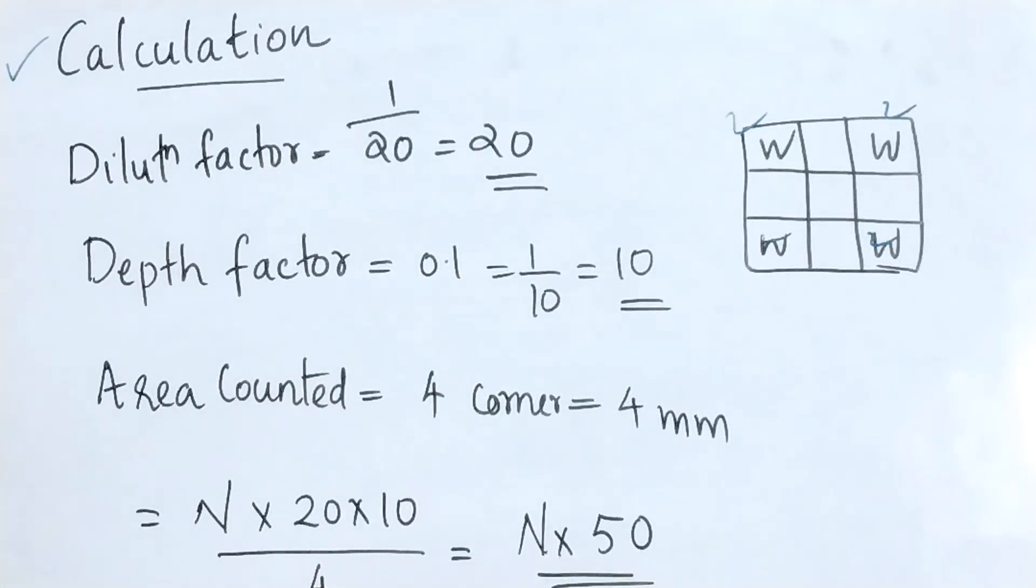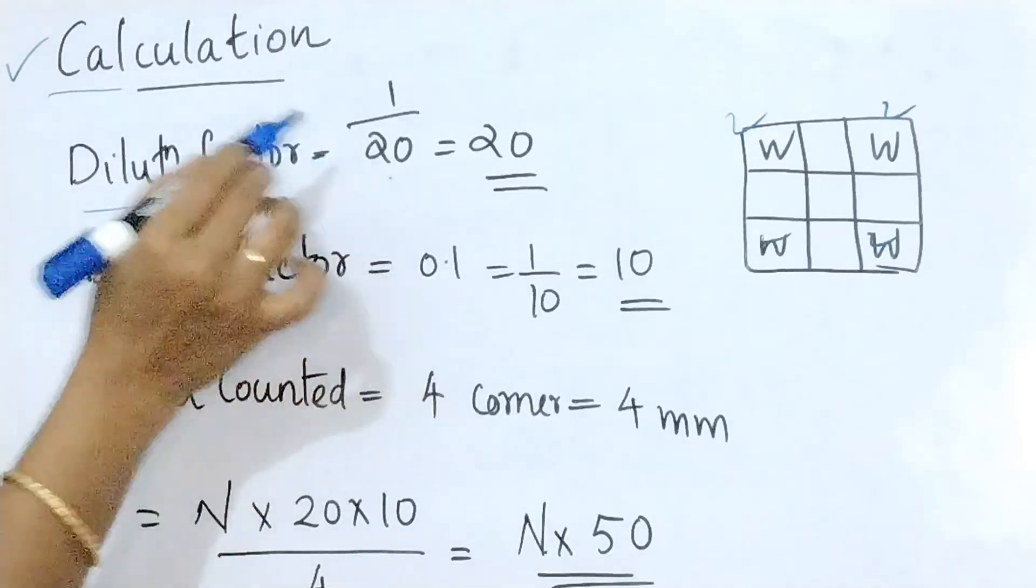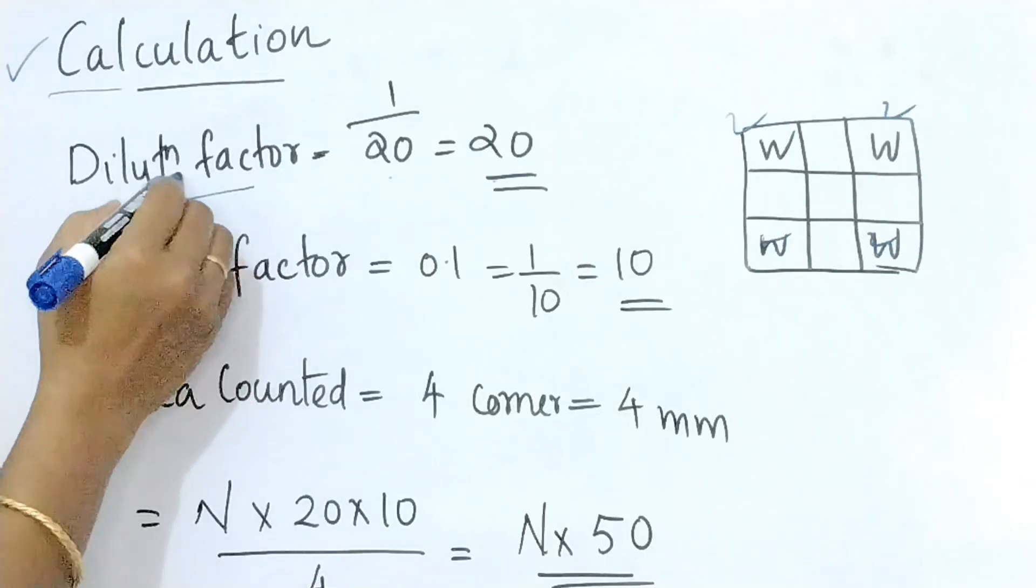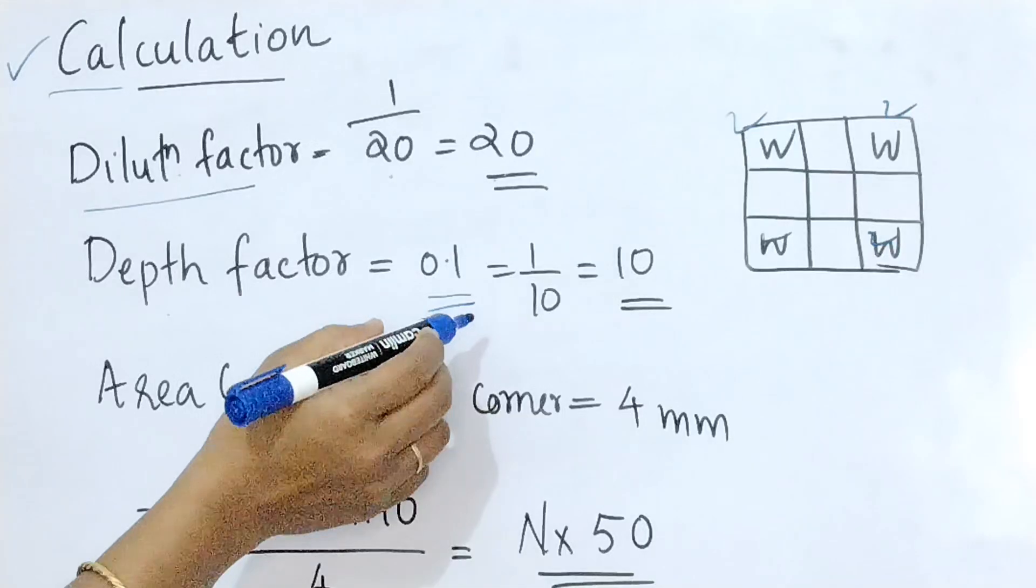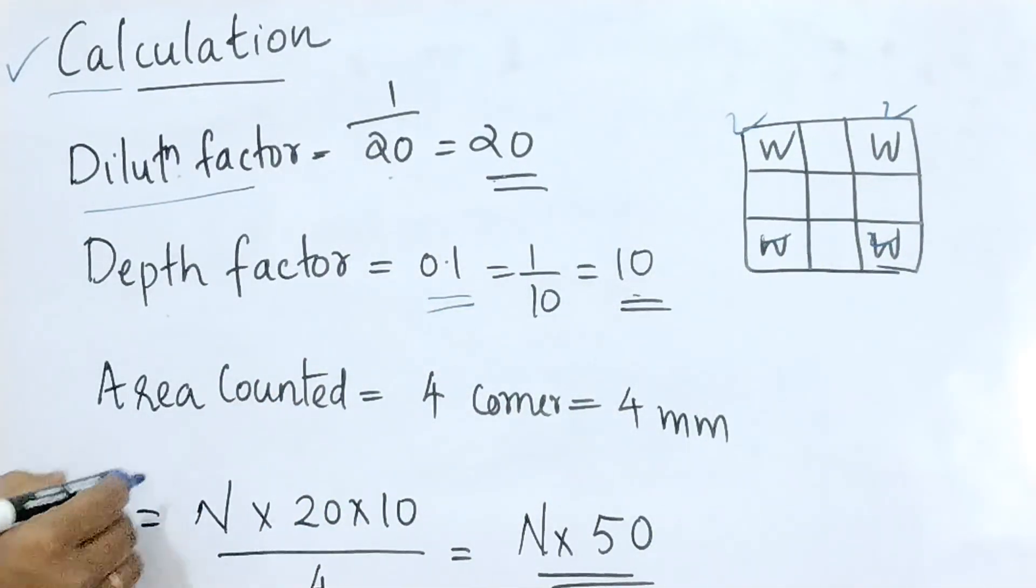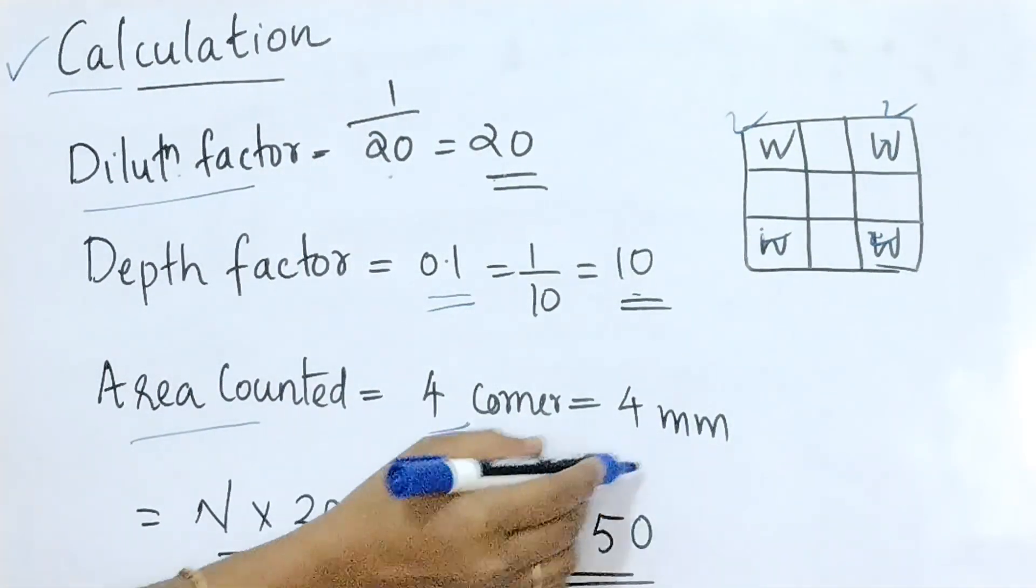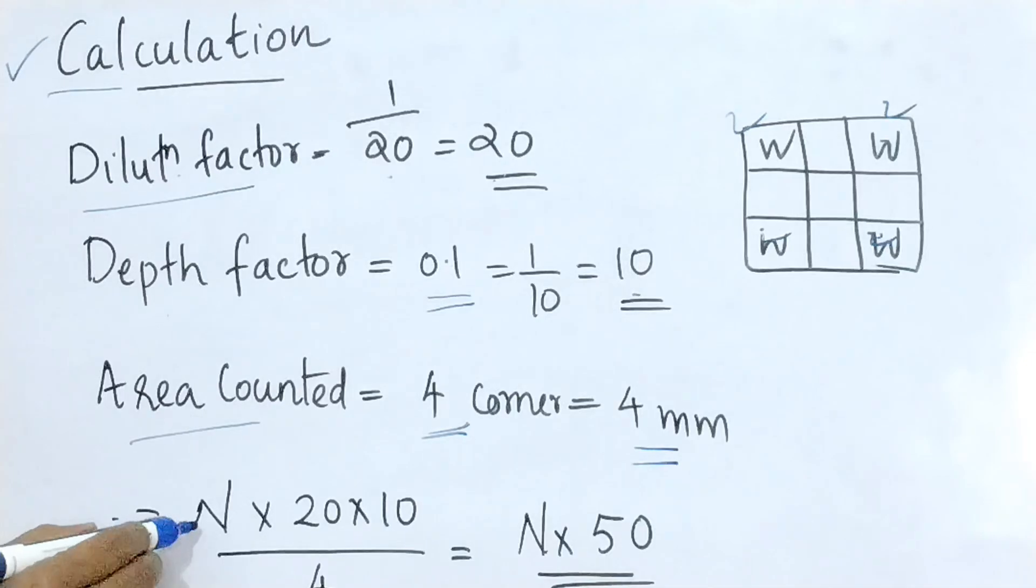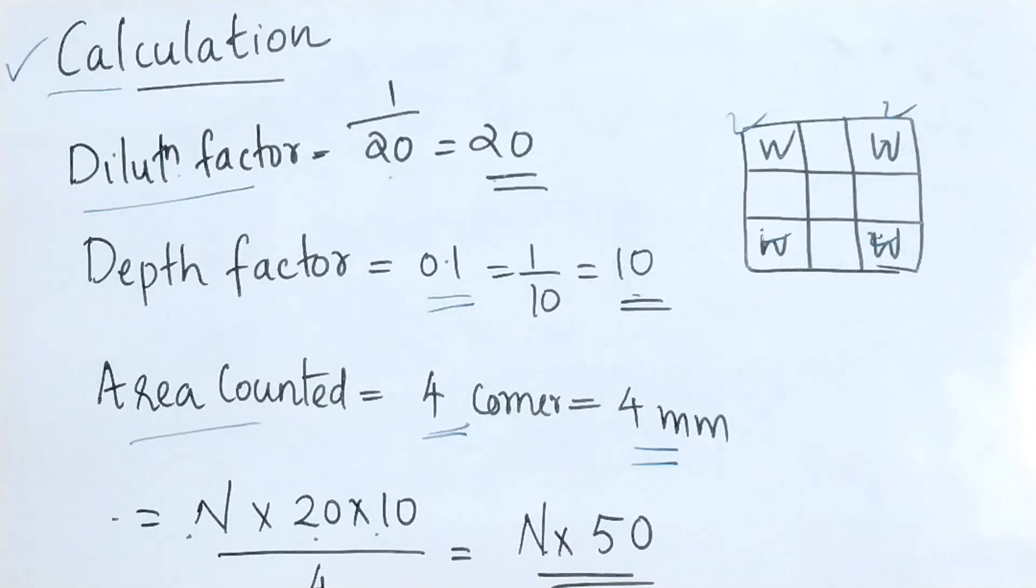You all know the calculation that is total cell counted equals dilution factor times depth factor divided by area counted. Here dilution factor is 20, as we are taking 1 in 20 dilution and depth factor is 10 and area counted is 4 mm square as we are using the 4 corner squares of 1 mm square each. So N times dilution factor 20 times depth factor 10 divided by area counted 4. So simply we got N times 50. The calculation is like this.